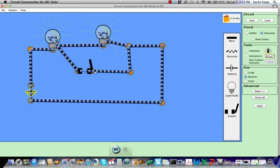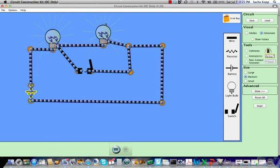Notice that initially no current, signified by the flow of blue dots, is passing through this path with the switch because the switch is open. Both light bulbs are glowing, although rather dimly.